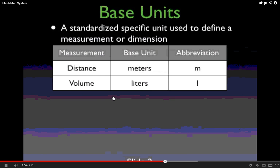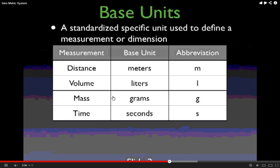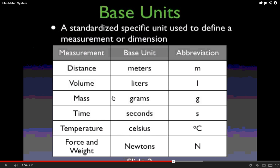There are different measurements that we're going to take, and you are going to use this information to fill in the top table on the sheet I gave you. Distance is measured in meters, volume is measured in liters, mass is measured in grams, time is measured in seconds, temperature is measured in Celsius, and force and weight is measured in Newtons. Complete this top table.